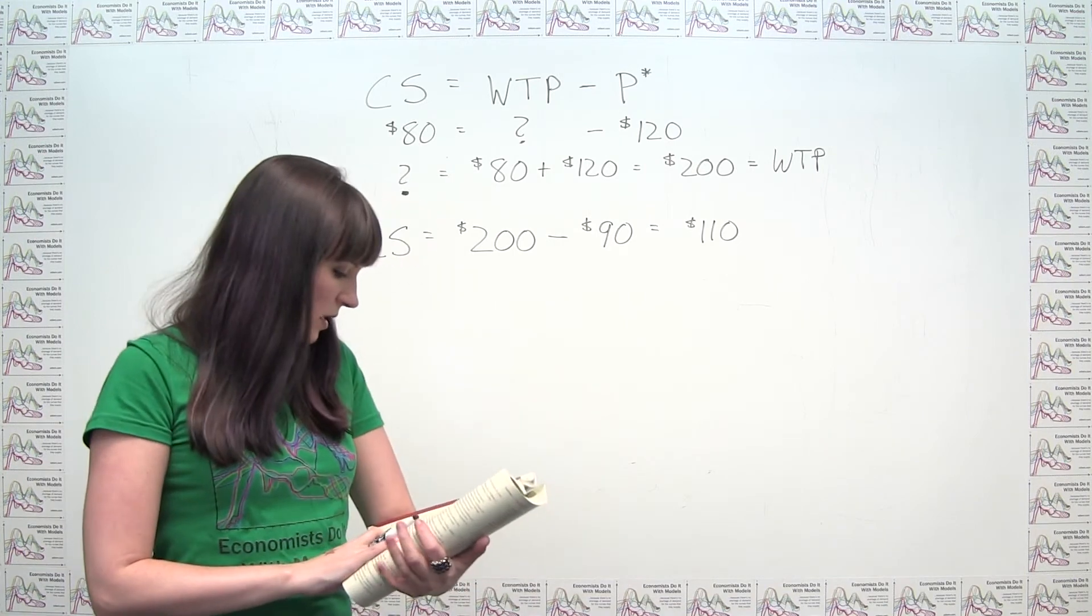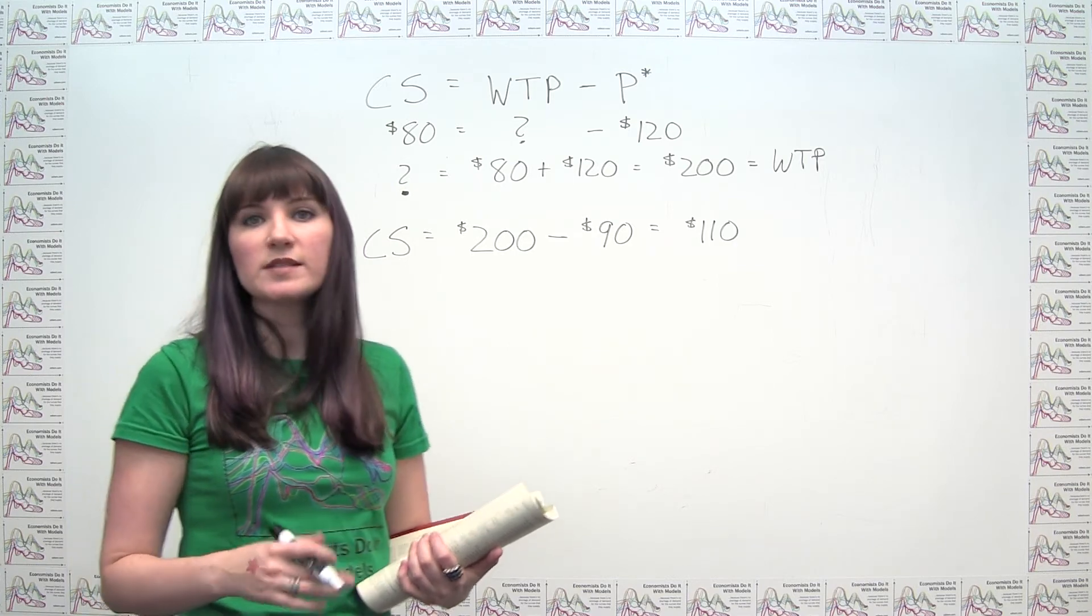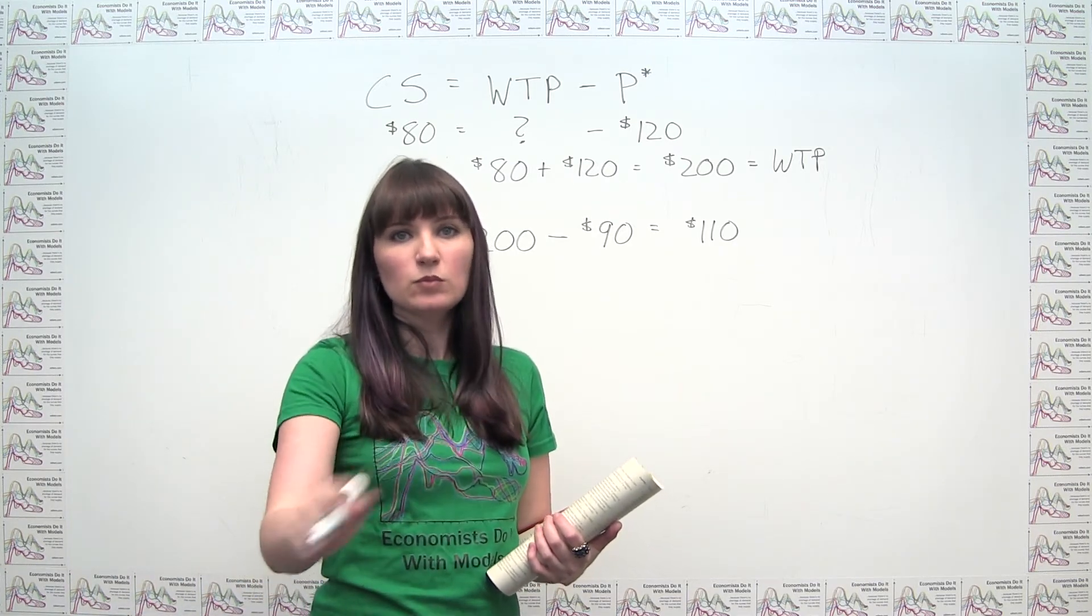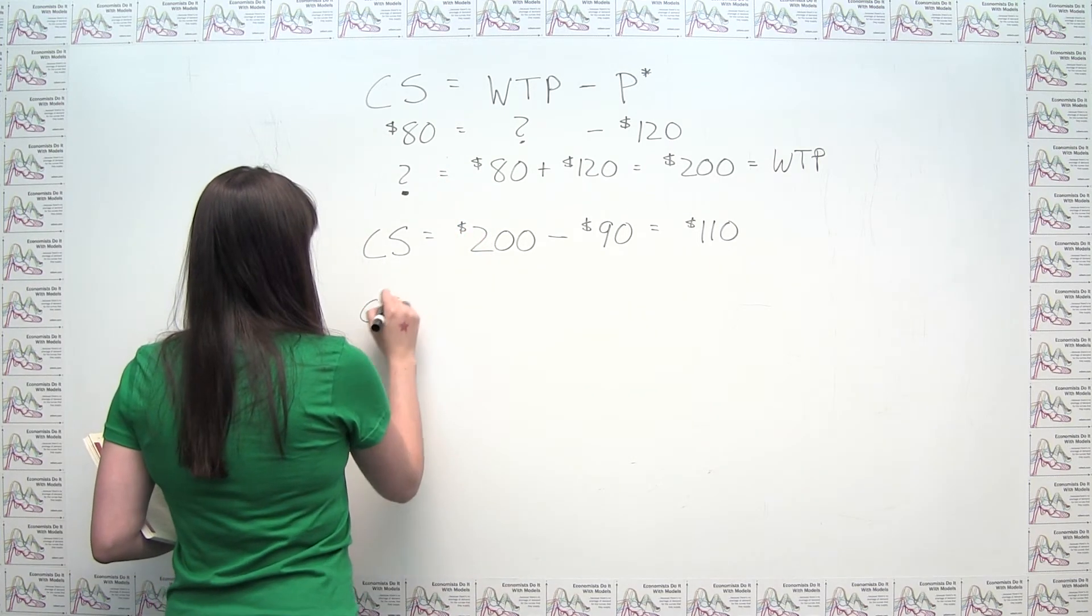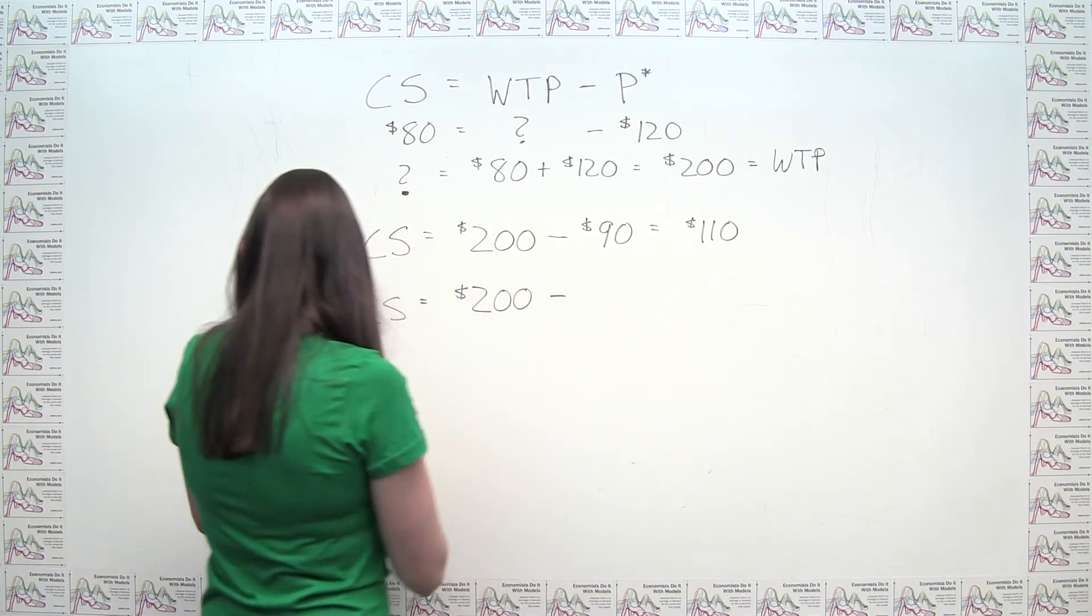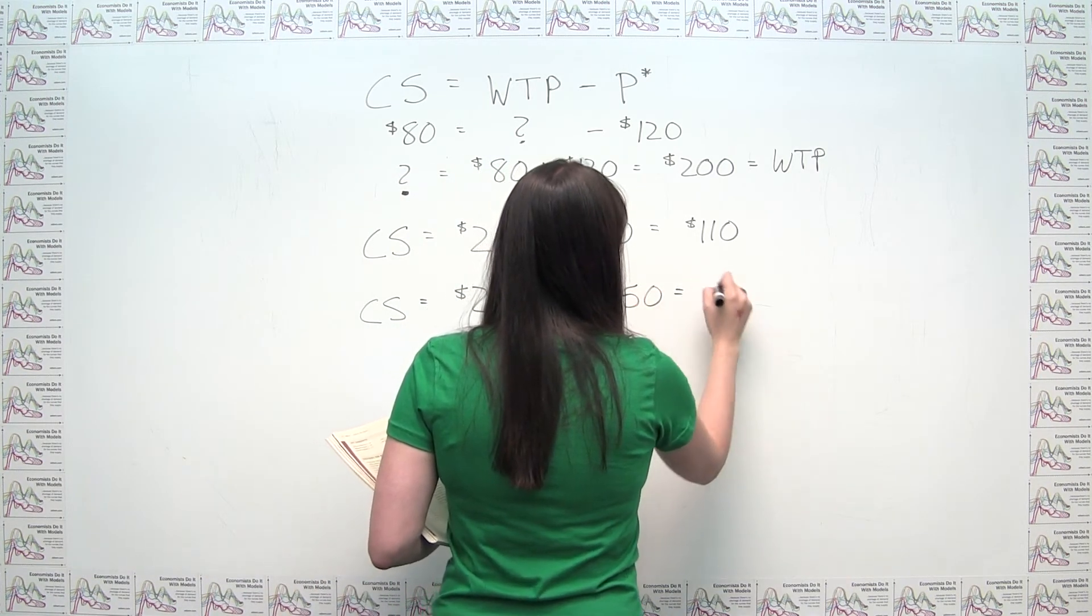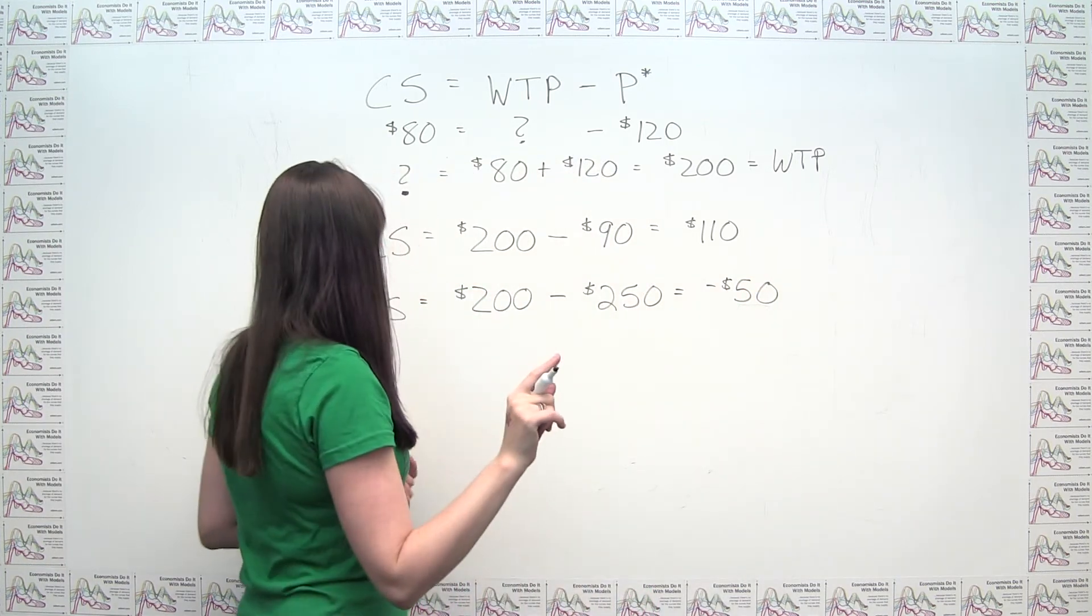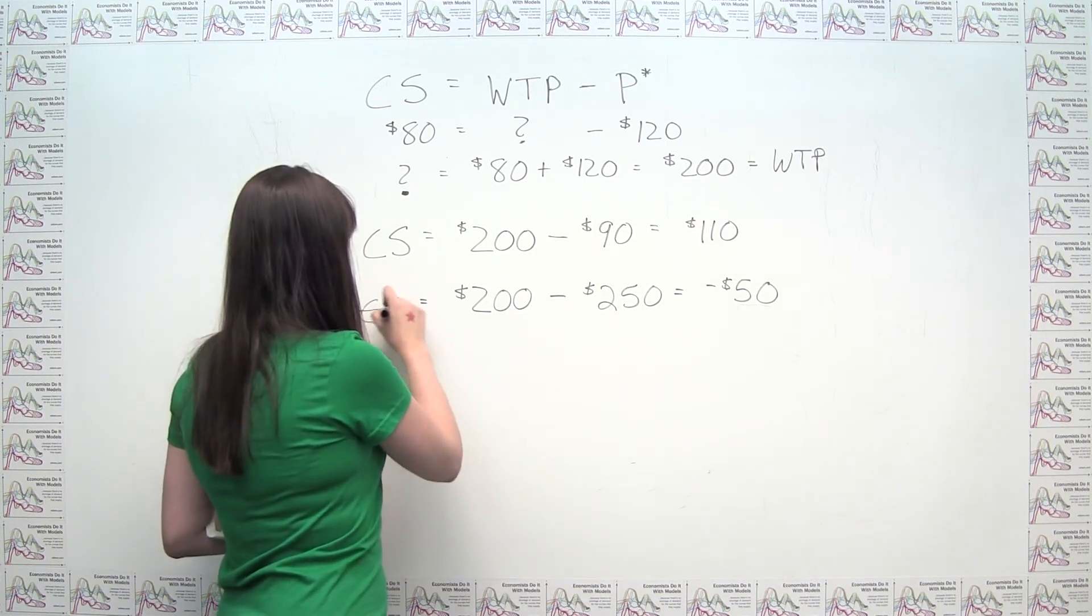The last part of the question says, if the price of an iPod were $250, what would her consumer surplus have been? And it's really tempting to just blindly push ahead with these formulas and say, okay, fine, consumer surplus is willingness to pay, which is still $200. Now we were told that the price is $250, okay, we've got to subtract, and we're left with negative $50 of surplus. But wait, so that doesn't seem right.